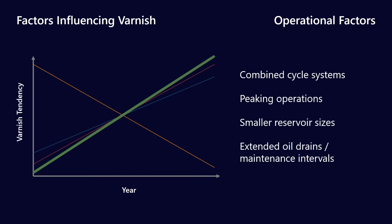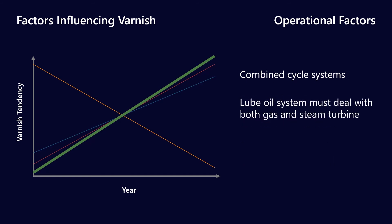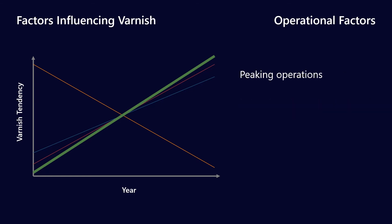We've also got operational factors — combined cycle systems, peaking operations, small reservoir sizes, and extended oil drains and maintenance intervals — all contributing to increased varnish tendency. With combined cycle systems, there's generally a shared lube oil system between the gas and steam turbine. The lubricant has to deal with more water than a standard gas turbine would, and it tends to get worked a little bit harder.